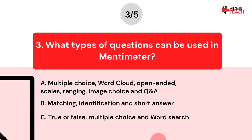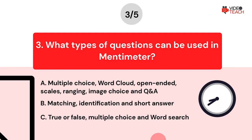Option B: matching, identification, and short answer. Option C: true or false, multiple choice, and word search. Now you have about 15 seconds to think about your answer.